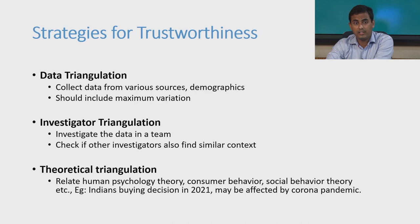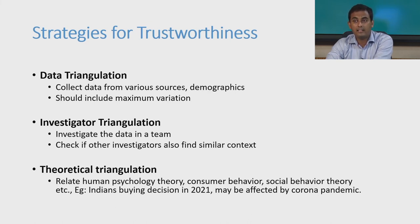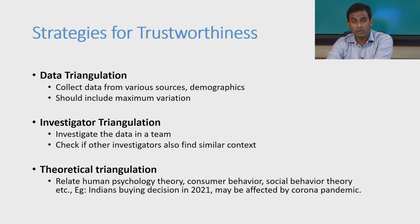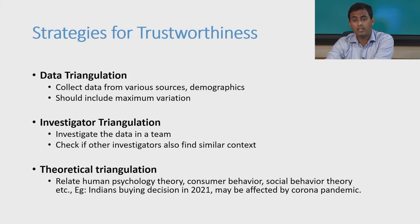The third strategy is theoretical triangulation, where existing theories in literature are used as a base to validate your findings. For example, if you are trying to identify Indian buying decisions in 2021, the results may be affected by the COVID-19 pandemic — a phenomenon that could influence your findings. Similarly, other theories of human-technology interaction, psychology, and consumer behaviour can serve as an important base to validate your findings.